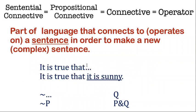Every connective has to have an ellipsis — a gap where you can put the input into it. What makes these connectives or operators sentential connectives is that the things you can put in there are whole sentences. Any part of language will count as a sentential connective if it has a gap, and in the gap you can put a whole sentence, and the output is a new complex grammatically well-formed sentence.